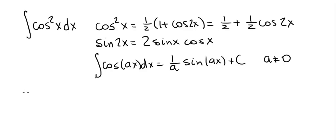The first step is to use the first identity and express the integral as, instead of cosine squared of x, 1 half plus 1 half cosine of 2x.